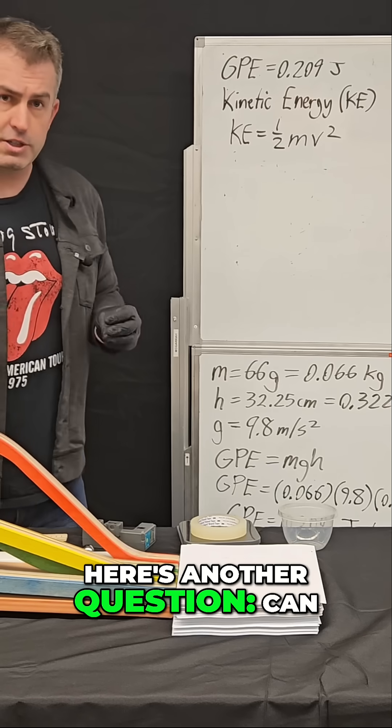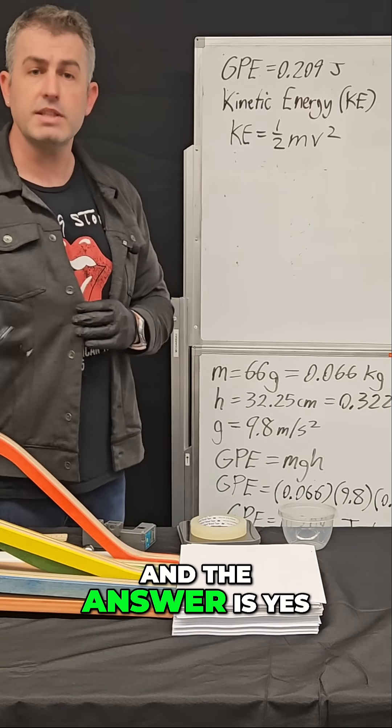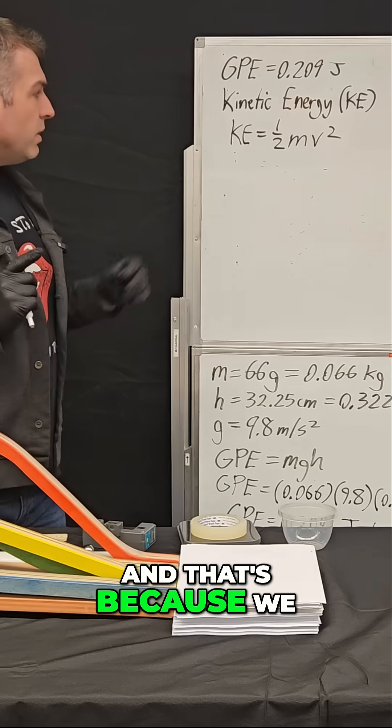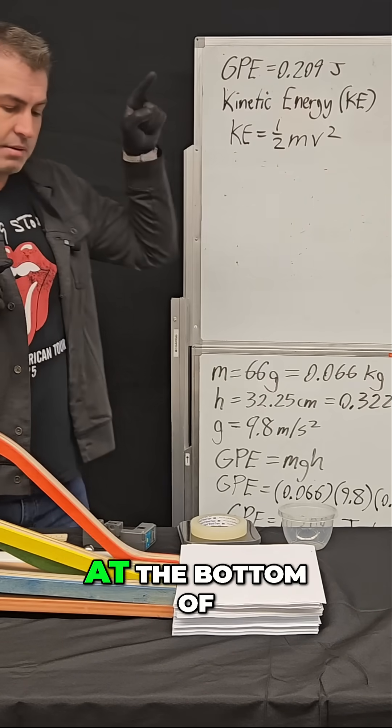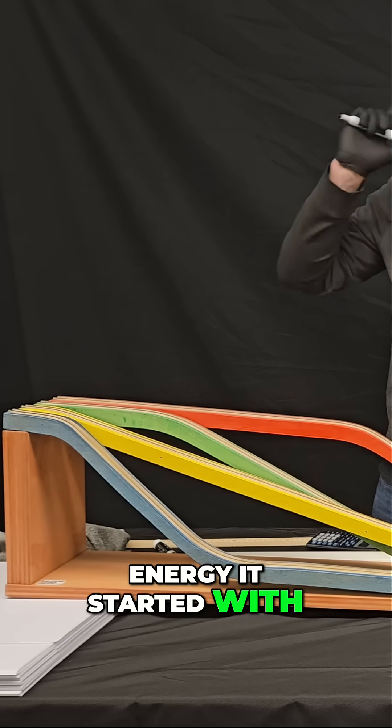Okay, well, here's another question. Can we solve for this velocity, v? And the answer is yes. That's because we know that the kinetic energy the marble has at the bottom of the ramp is exactly equal to the potential energy it started with at the top.